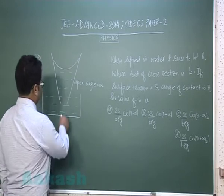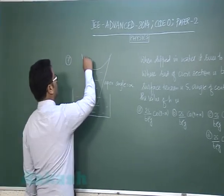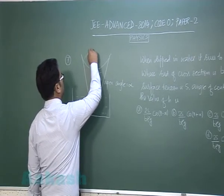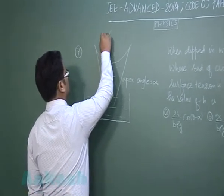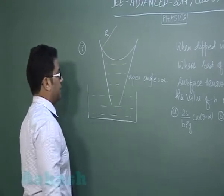You can see in this way the semi vertex angle is alpha by 2 and this is the radius of meniscus.